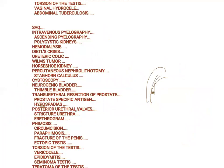Posterior urethral valves is a congenital condition and is the most common cause of hydroureter and hydronephrosis in children, and may require surgical correction. Stricture urethra — again, stricture formation in the urethra — may be because of chronic gonorrhea, and can be problematic.